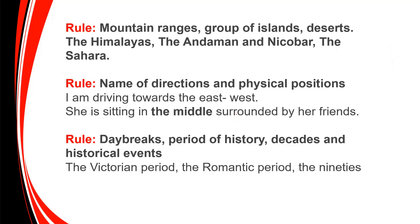Before mountain ranges, islands, and deserts, 'the' has to be used. But remember carefully — before groups of mountains and groups of islands only do you use the definite article 'the'. Example: the Himalayas — a group of mountains. The Andaman and Nicobar — a group of islands. But before Sri Lanka — it is only one island — 'the' should not be used. Before Kailasagiri, you are not allowed to use 'the' because it is only a single mountain.